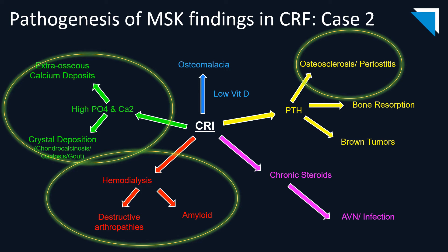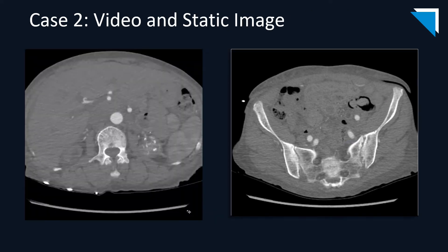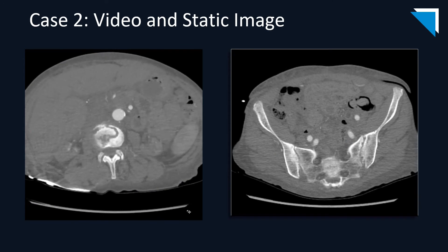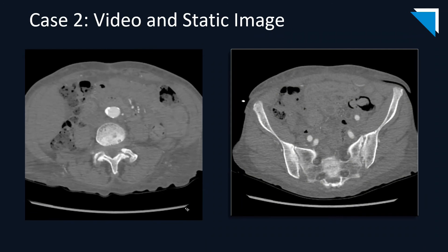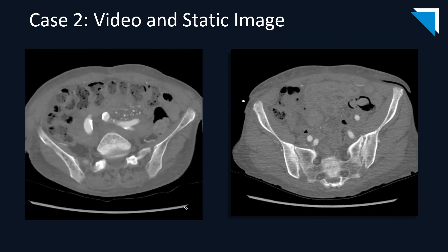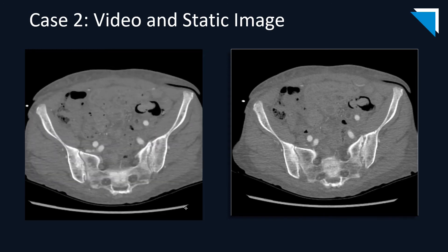The following cluster of cases adds findings of elevated parathyroid hormone along with extra-osseous deposition of excess phosphate and calcium, and introduces us to consequences of chronic hemodialysis. In this patient, we see bilateral sacroiliac joint erosions with areas of sclerosis superimposed upon a background of diffusely abnormal mineralization. Cine imaging through the same patient demonstrates atrophic kidneys along with vascular and soft tissue calcifications, in addition to the bilateral sacroiliac joint sclerosis and erosions.